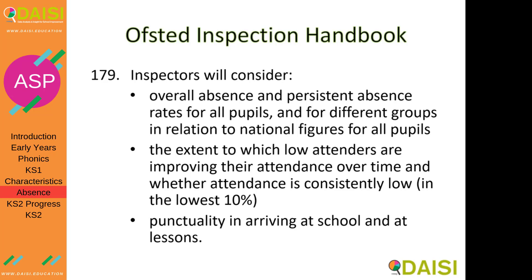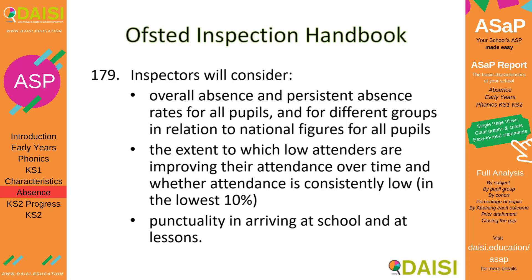Why should you be looking at absence? The Ofsted inspection handbook says inspectors will consider overall absence and persistent absence rates for all groups and for different groups in relation to national figures for all pupils. However, in the IDSR they seem to be looking at absence rates compared to not just all pupils but also groups, and also to the extent to which low attenders are improving their attendance over time.